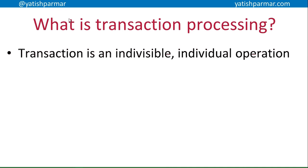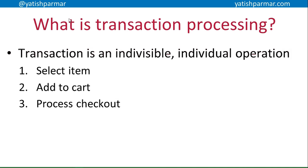For example, if I'm buying something from Amazon, I've got to select my item — that's one transaction. I've got to add it to the cart — that's another transaction. The process to checkout is another series of transactions: entering my details, entering my credit card information, getting it verified by Visa, then once the payment is taken, etc.